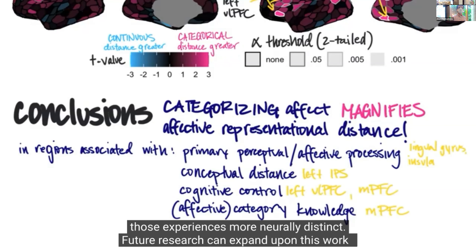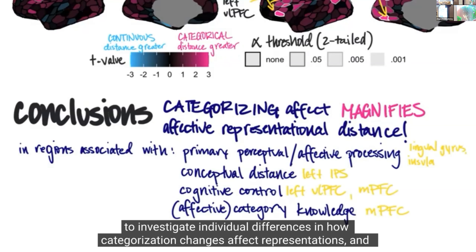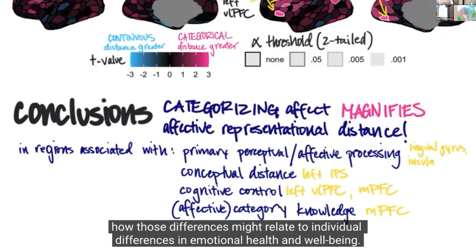These results show that categorizing affect magnifies affective representational distance, especially between positive and negative affect representations, in regions associated with primary perceptual and affective processing, conceptual distance, cognitive control, and affective category knowledge. Activating category information and applying labels to affective experience makes those neural representations more distinct. Future research can investigate individual differences in how categorization changes affect representations and how those differences relate to emotional health and well-being.